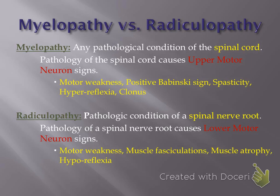When the spinal cord is being compressed or injured, it is going to result in a collection of signs or symptoms known as upper motor neuron disease. Upper motor neurons begin in the motor cortex in the cerebrum and extend their axons down through the internal capsule, through the brain stem in the cerebrospinal tract, and down through the spinal cord, eventually synapsing on the lower motor neurons at the individual spinal levels.